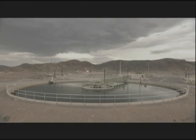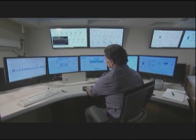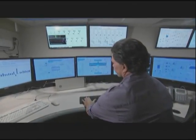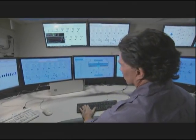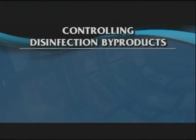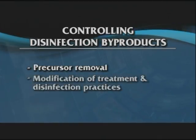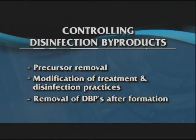It's important for water utilities to comply with these regulations to protect public health. DBP control strategies can be divided into three categories: precursor removal, modification of treatment and disinfection practices, and removal of DBPs after formation.